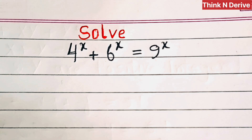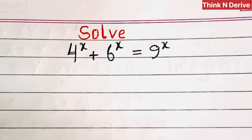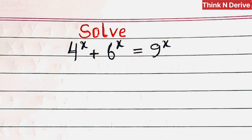Hi everyone, welcome back to Think and Derive. In this video tutorial we need to solve 4 power x plus 6 power x equal to 9 power x. In the first step we are going to divide throughout by 4 power x.